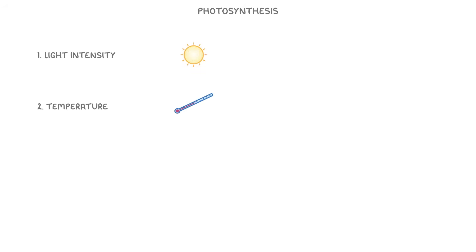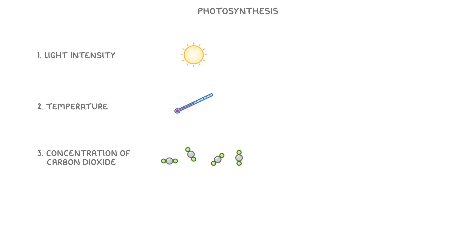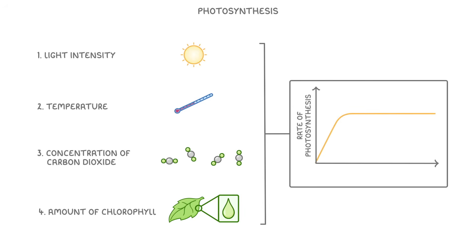We saw in the last video that plants need to carry out photosynthesis in order to survive. The rate at which they can do this is dependent on four main things: light intensity, temperature, the concentration of carbon dioxide in the air, and the amount of chlorophyll that the plants have. In this video we'll explore how each of these affects photosynthesis and how we can show it using graphs.